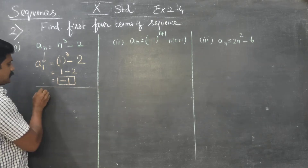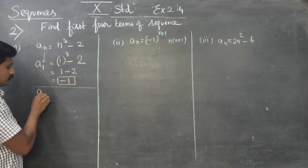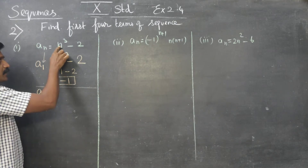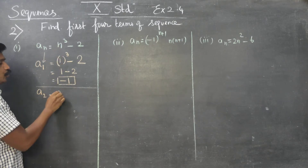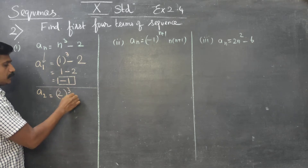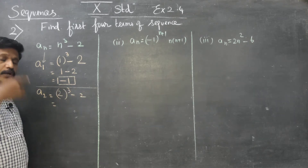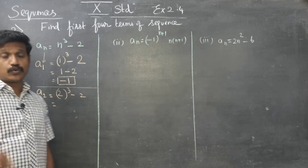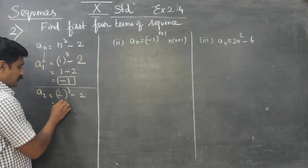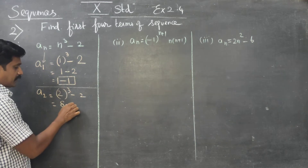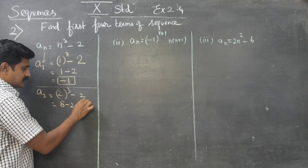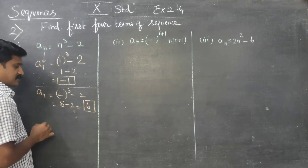Next, A2. Put n = 2: 2 cube minus 2. 2 into 2 into 2 is 8. 8 minus 2, answer is 6.